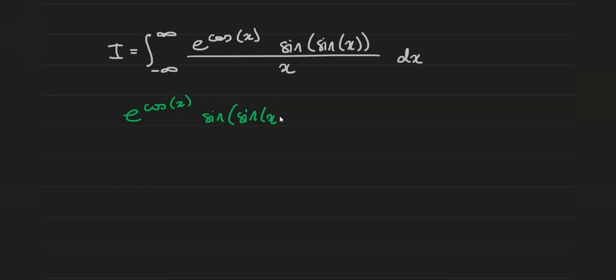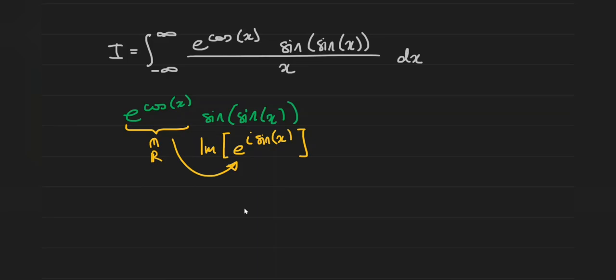First I want to take a look at that numerator, because it is quite messy, and we can simplify it quite nicely — in particular that sine of sine of x. Whenever you have sine of something, you can always think about it as being the imaginary part of e to the i times that something on the inside, which in this case is sine of x. We also have this e to the cosine of x factor out the front, and because that's just a real number, we can drag it inside of that imaginary part operator without any problems. So we can rewrite the numerator as being the imaginary part of e to the cosine of x times e to the i times the sine of x.